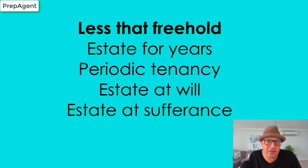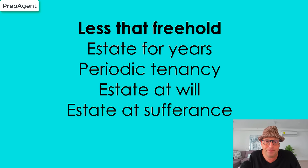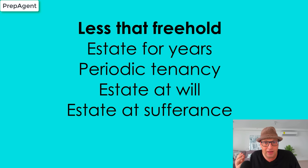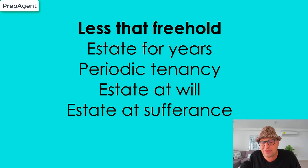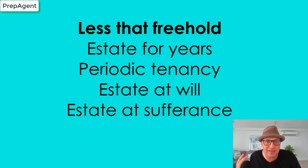Estate for years is when there's a defined period of time, like May 1st to August 8th — a summer rental would be a good example. Periodic tenancy is when it's a reoccurring time frame, like week to week, month to month, or year to year. Estate at will means it could end at any time. Estate at sufferance means they're staying too long — the landlord's suffering. I often refer to this as having a deadbeat tenant.